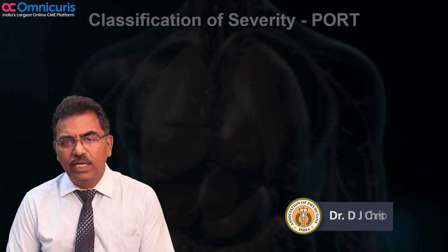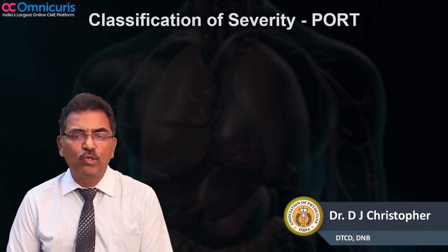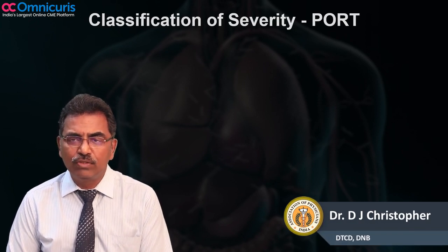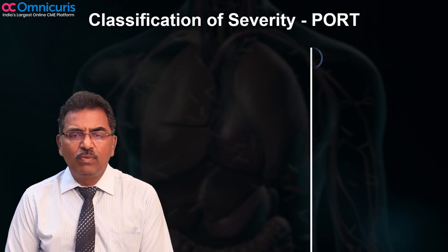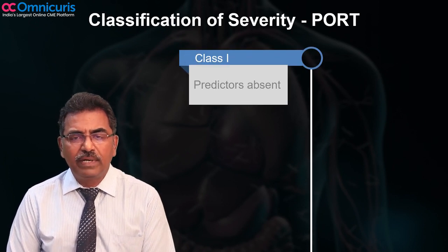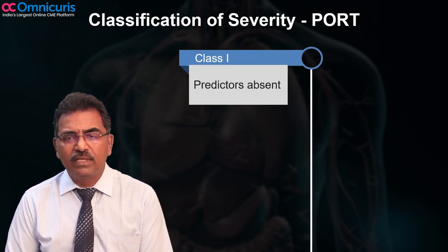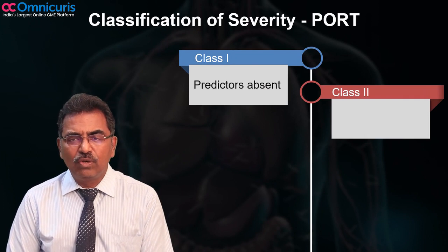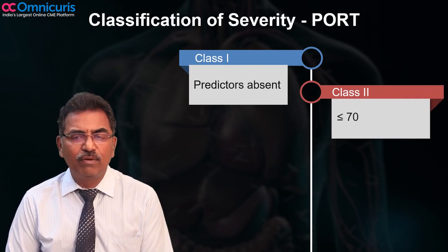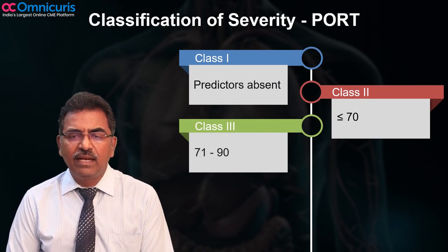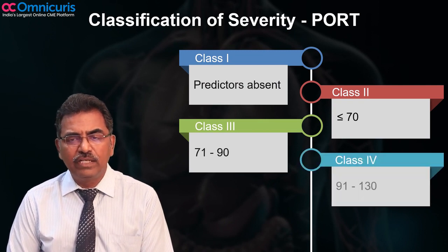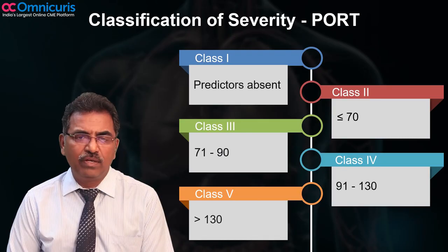The PSI or PORT score is also significant. Class 1 are those where predictors are absent. Class 2 are those where the score is less than or equal to 70. Class 3 are those with a score of 71 to 90. Class 4, 91 to 130. And class 5, more than 130.